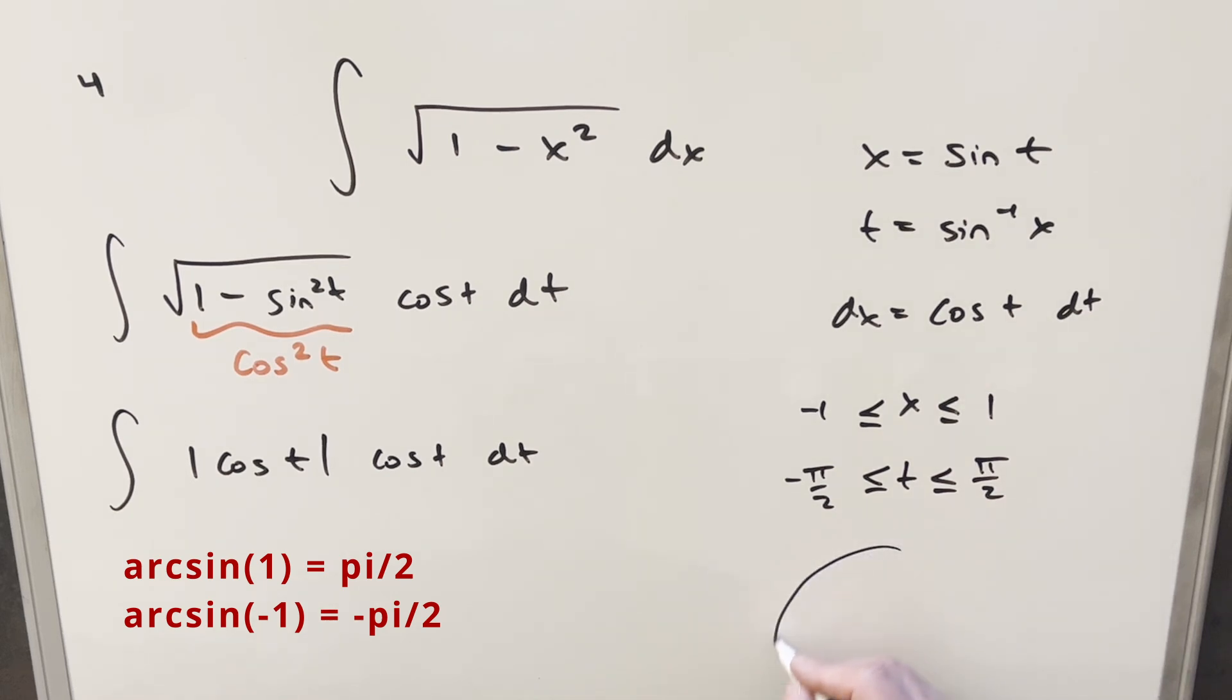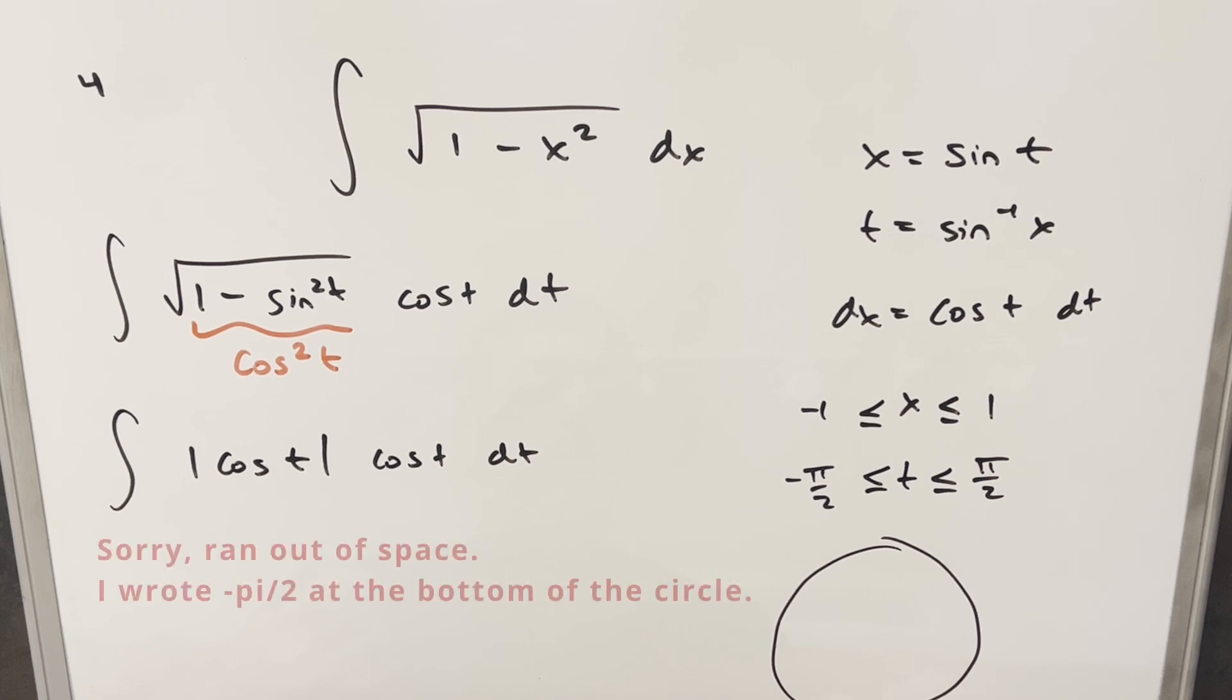But then just thinking of this in terms of the unit circle, minus pi over 2, if this is minus pi over 2 here, and here's our positive pi over 2.